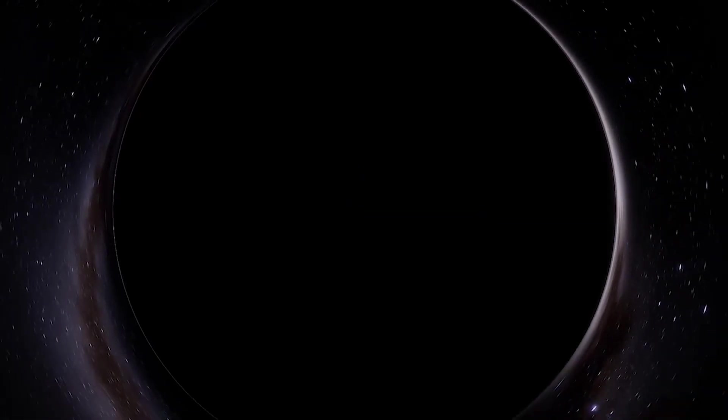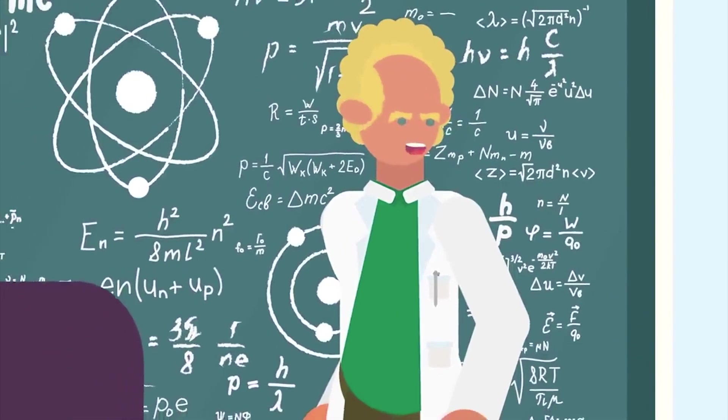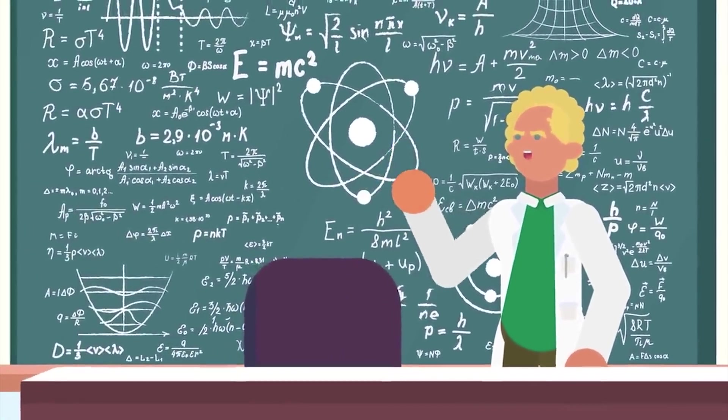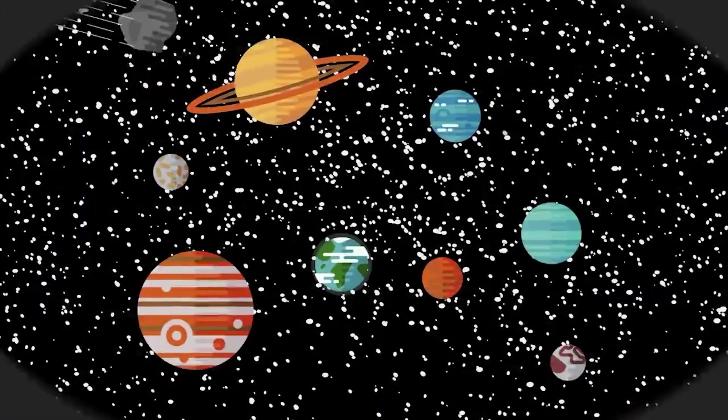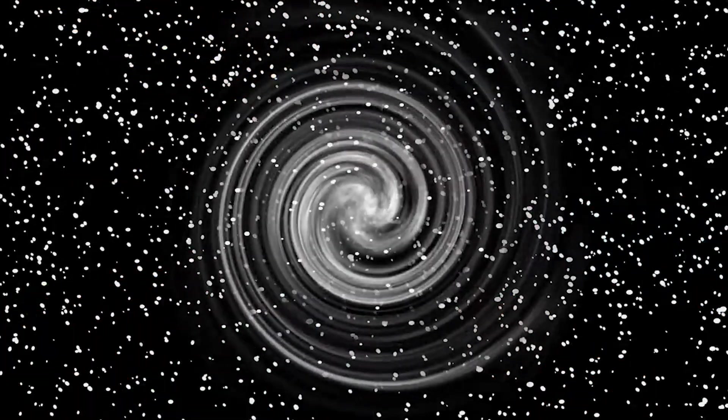Stellar black holes are formed when the center of a massive star collapses on itself, causing a supernova. And as we mentioned before, supermassive black holes are created at the same time as their galaxies.